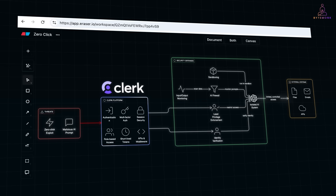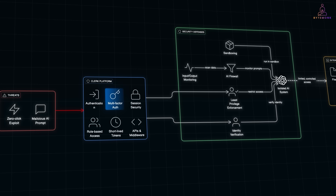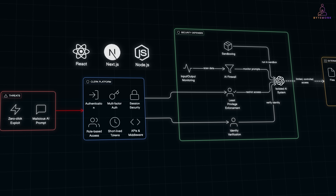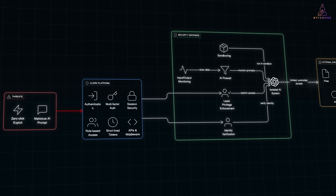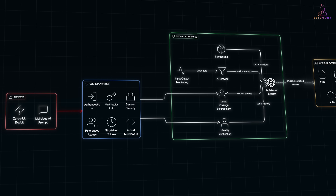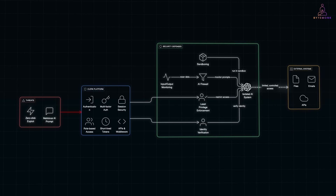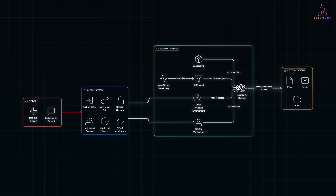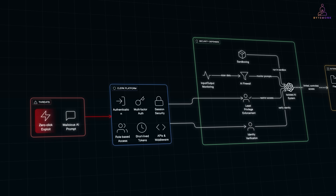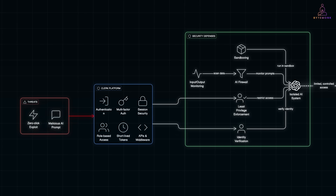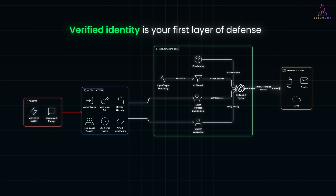Clerk is a developer-focused platform for authentication and user management that handles sign-in, multi-factor auth, session security, and role-based access — built for modern stacks like React, Next.js, and Node. Developers can use Clerk's API and middleware to automatically enforce least privilege, where each user or agent only gets the access they actually need. Clerk isn't built specifically to stop zero-click attacks — it's an authentication and identity platform — but its short-lived tokens and strong access controls follow the same security principles that help reduce the impact of such exploits. So if a zero-click exploit or a malicious AI prompt tries to impersonate someone or act outside its scope, Clerk's short-lived tokens and strong identity checks can stop it instantly.